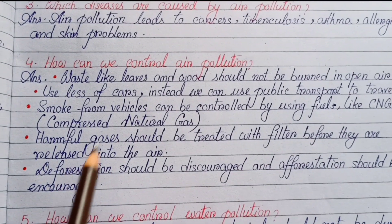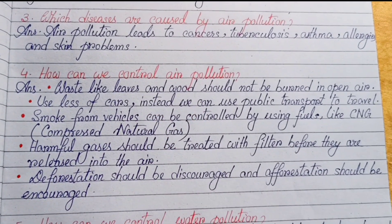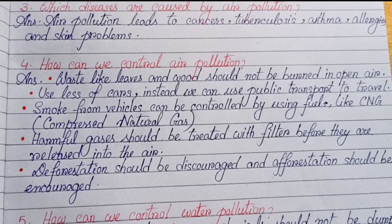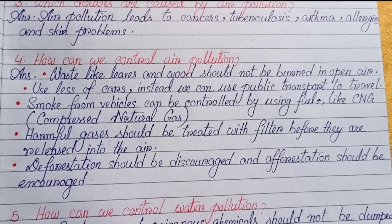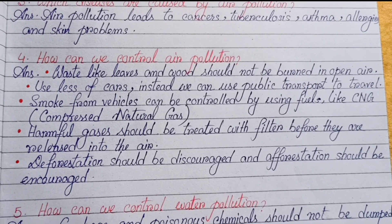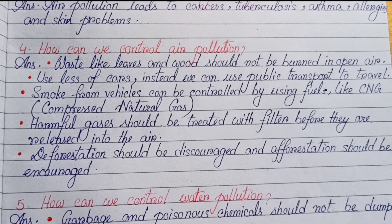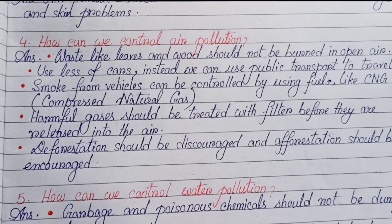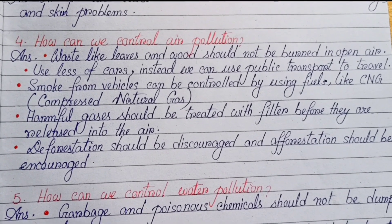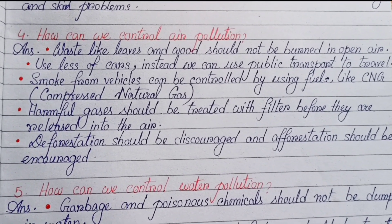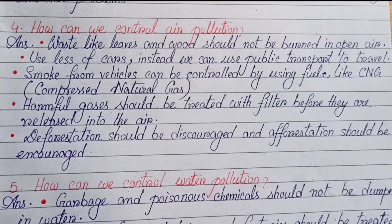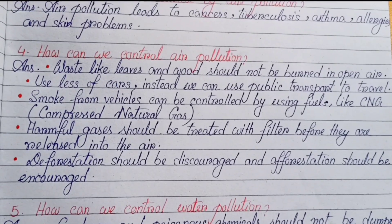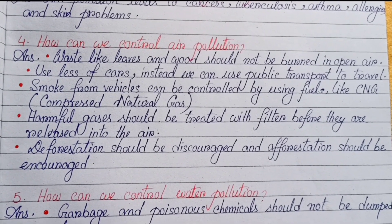Question number four: How can we control air pollution? Leaves and wood should not be burnt in the open air. Use fewer cars; instead, we can use public transport to travel. Smoke from vehicles can be controlled by using fuels like CNG — that means Compressed Natural Gas. Harmful gases should be treated with filters before they are released into the air. Deforestation should be discouraged and afforestation should be encouraged.